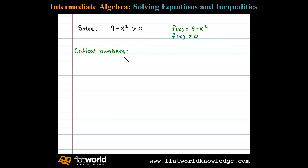The critical numbers in this case are simply the roots, so we'll set 9 minus x squared equal to 0 and solve. 9 minus x squared is a difference of squares, so this factors as 3 plus x times 3 minus x.